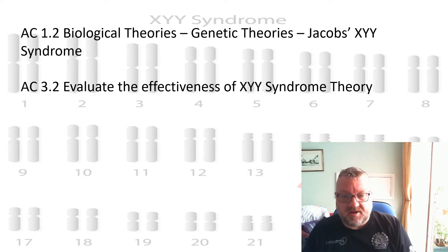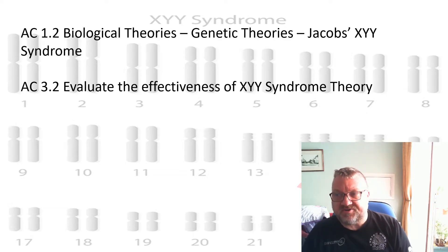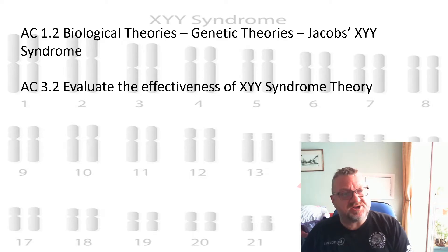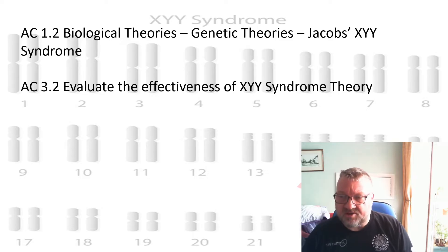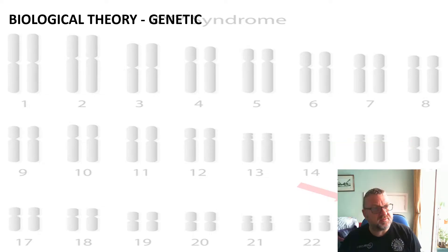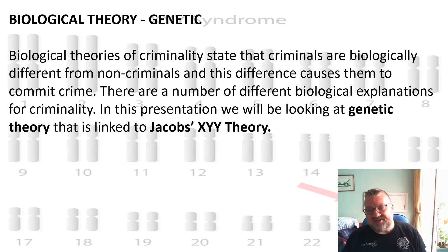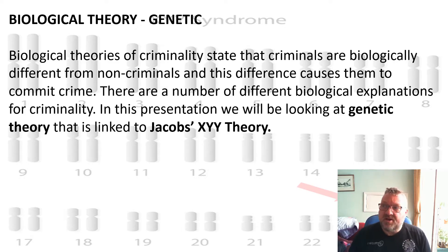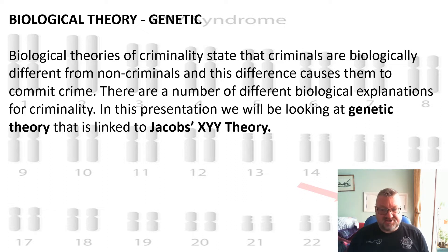Today we're going to look at some more biological theories, again in the subcategory of genetic theories, and this PowerPoint is going to look at Jacobs's XYY syndrome. We're going to evaluate its effectiveness and look at how the syndrome has informed policy development. Biological theories of criminality try to show that criminals are biologically different from non-criminals, and it's this difference that causes them to commit crime.